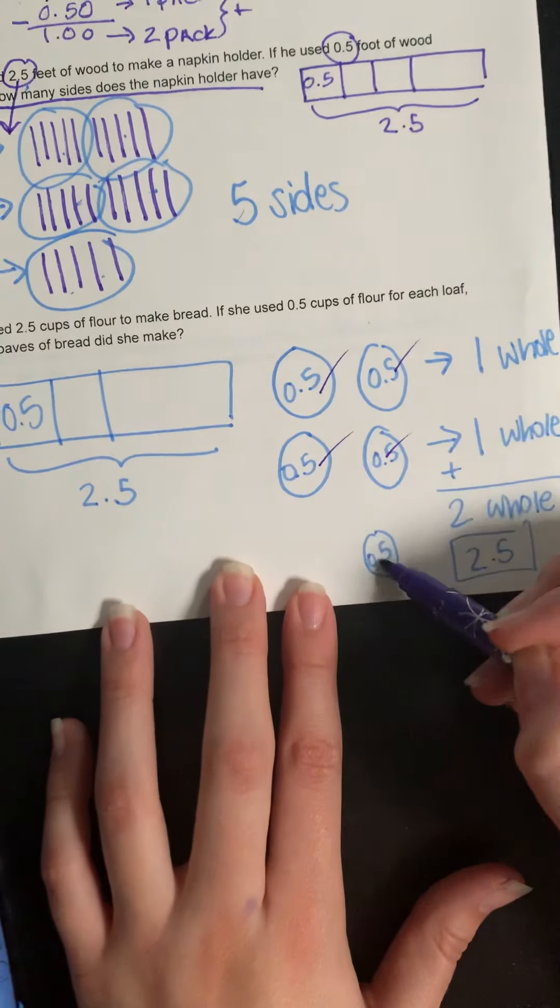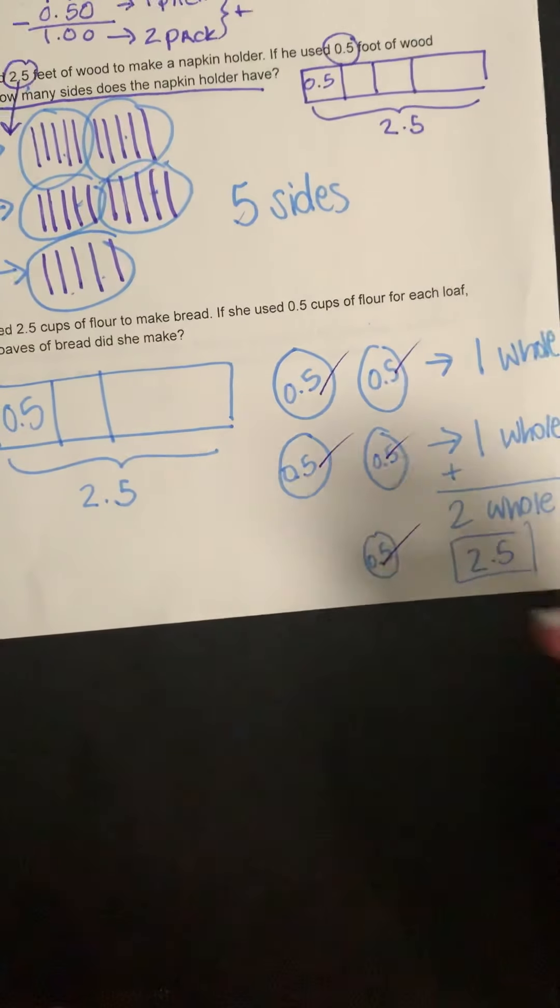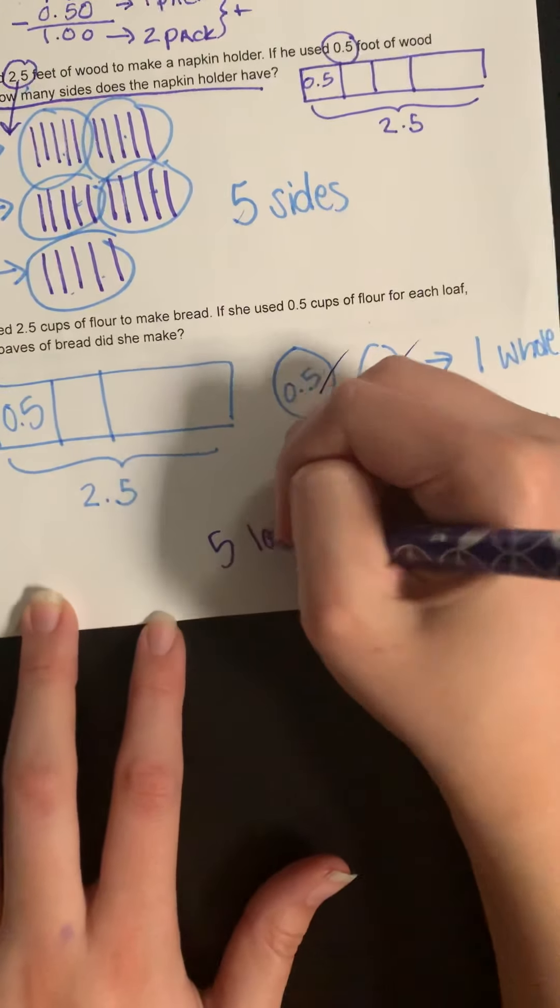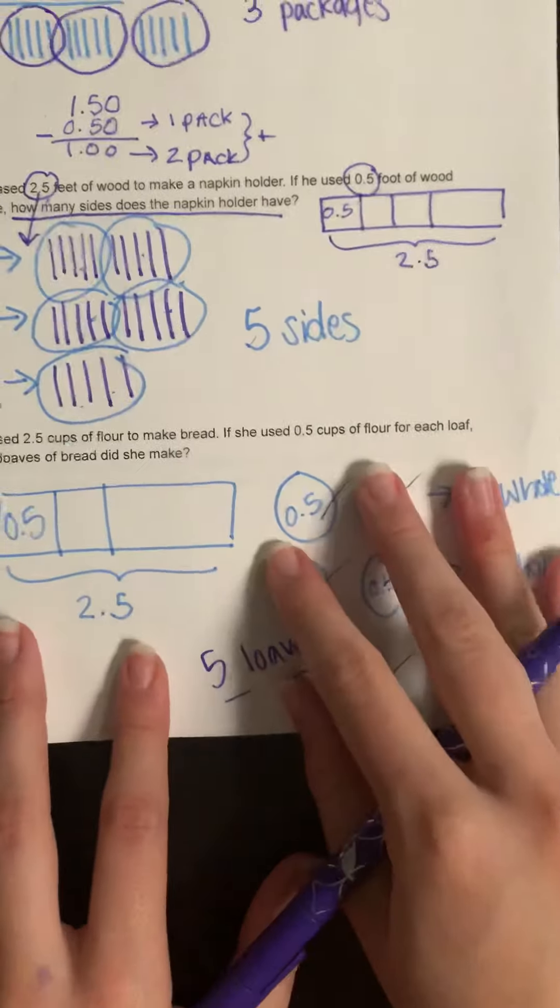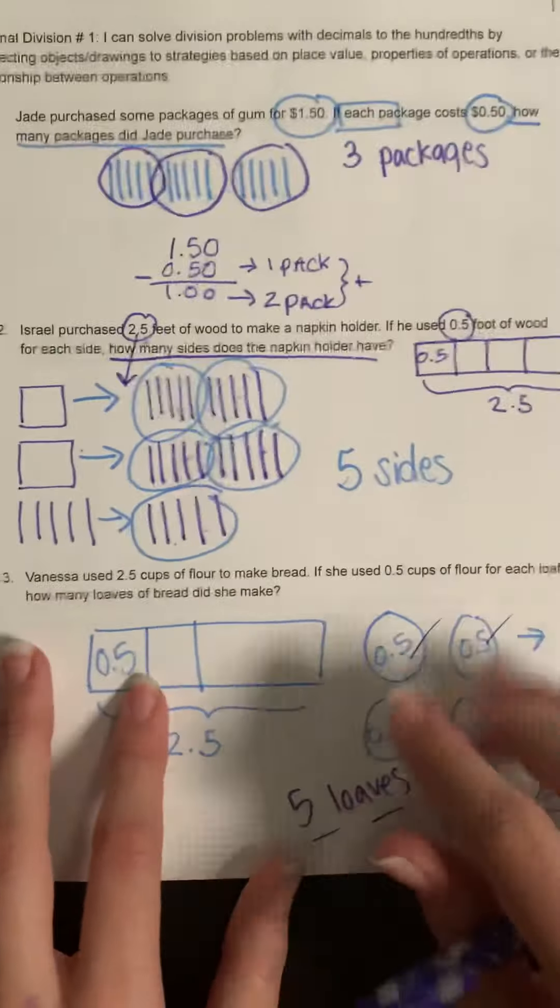That's just showing you one more kind of alternate way that you could think about this problem. Even though it was kind of the same numbers as up here, I would still stick with drawing your base-10 models.